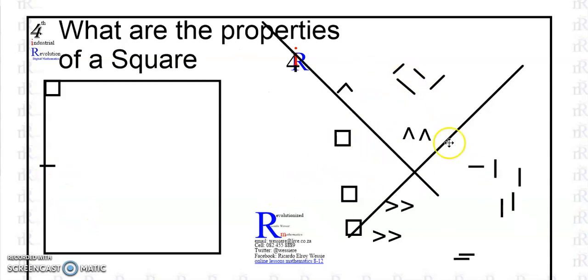Most of us will know that a square has two pairs of opposite sides that are parallel to each other.